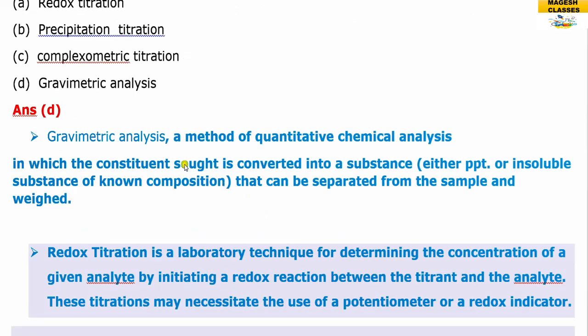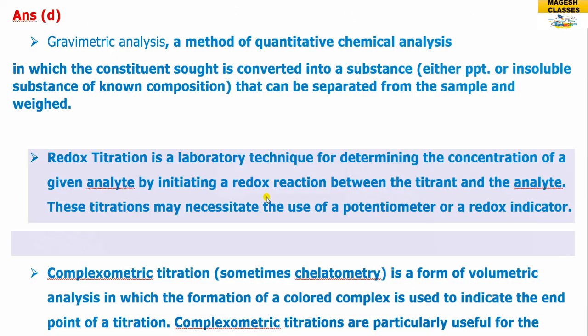In redox titration, the analyte concentration is determined. The redox reaction involves electron transfer — gaining and losing electrons. Potentiometry is related to this type of titration.